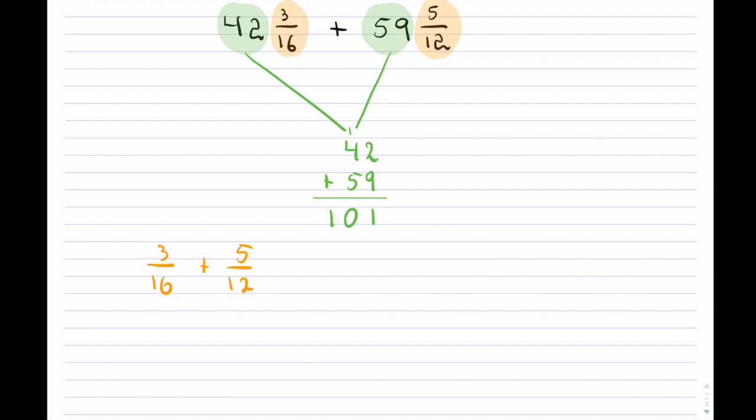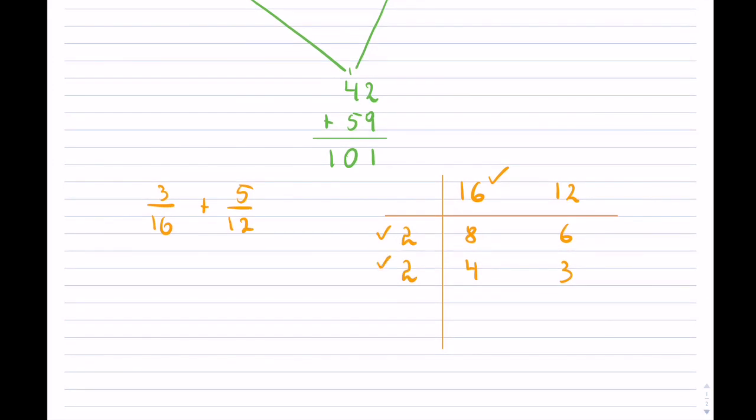And now finding a common denominator between them. So we can use the same method that I showed you in the fractions video, and you can re-watch that one if you like. So I will use primes to try to reduce these. So taking the first 16, I know that 2 goes into 16, 8 times. 2 goes into 12, 6 times.